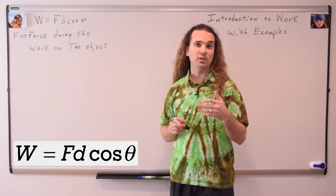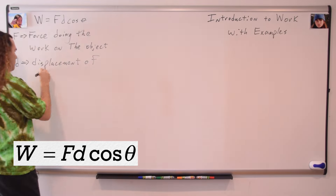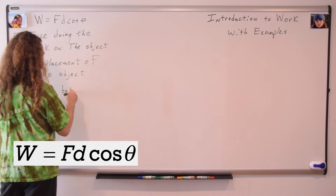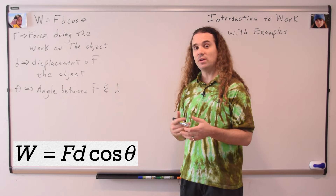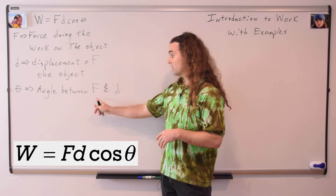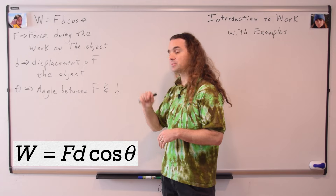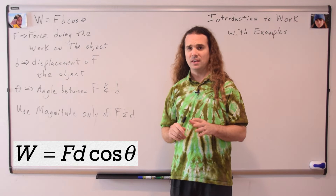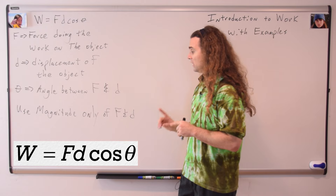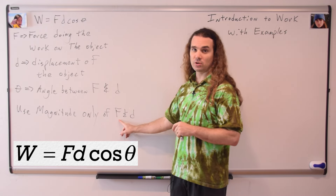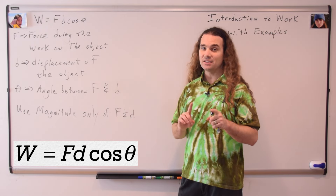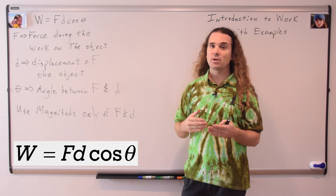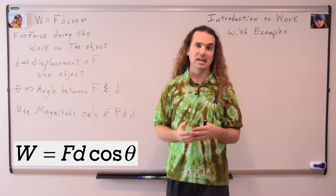F is the force doing the work on the object. D is the displacement of the object. Theta is the angle between the other two variables in the equation — the force doing the work and the displacement of the object. When using the equation for work, use only the magnitudes of the force and the displacement. It is the cosine of the angle which determines whether the work is positive or negative.